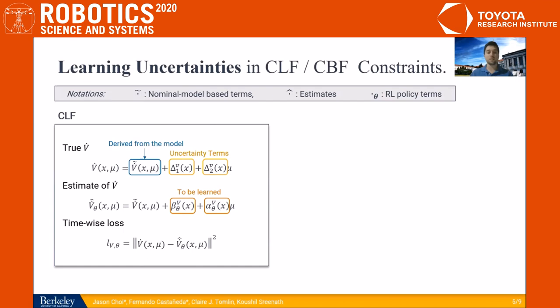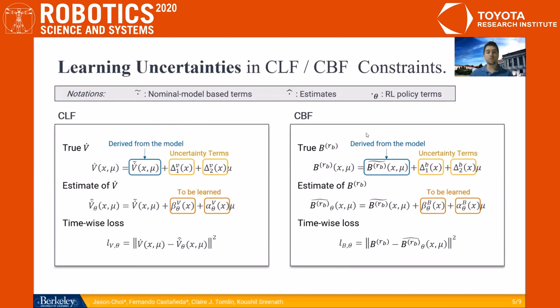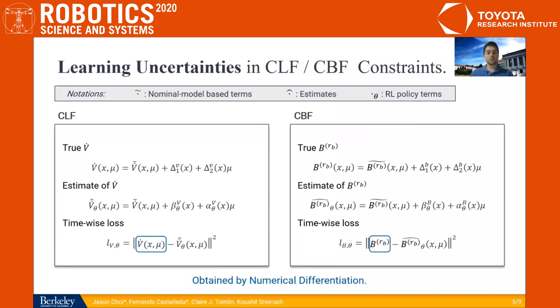For the Rb's derivative of the CBF, we follow exactly the same approach, since the true value of the derivative is again a sum of a model-derived term and uncertainty terms. So we build an estimator of the true derivative and use again a least squares loss function. We can actually follow this same procedure for any other control affine constraint that depends on the dynamics of the system.